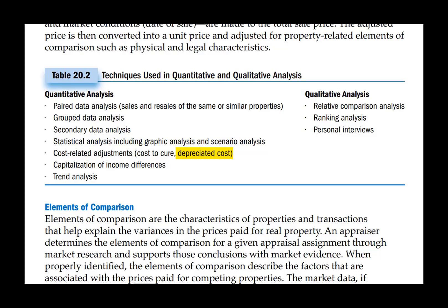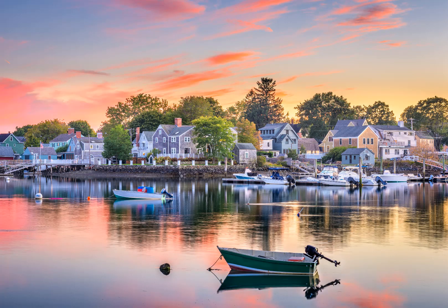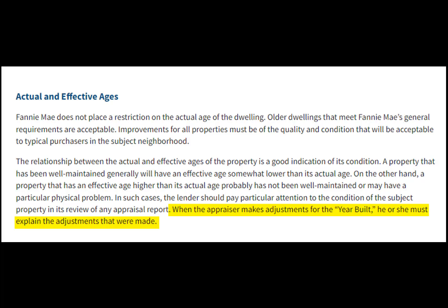And for more, here's Scott. Have you ever wondered if and how to make an age adjustment? Some neighborhoods have a mix of ages, and you may need to use comps that are significantly newer or older. The Fannie Mae Selling Guide says this about age adjustments: when the appraiser makes adjustments for the year built, he or she must explain the adjustments that were made. Adjusted sales and sensitivity analysis are two ways to support an age adjustment.